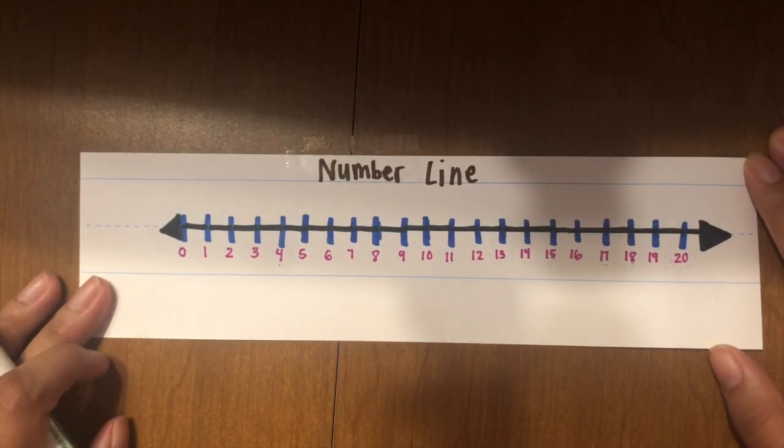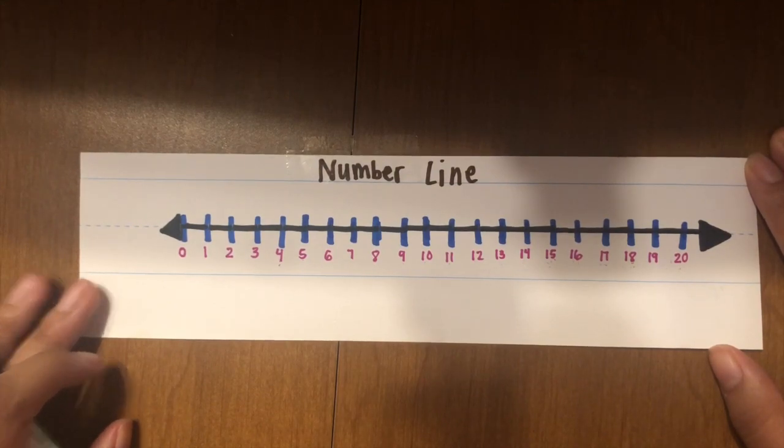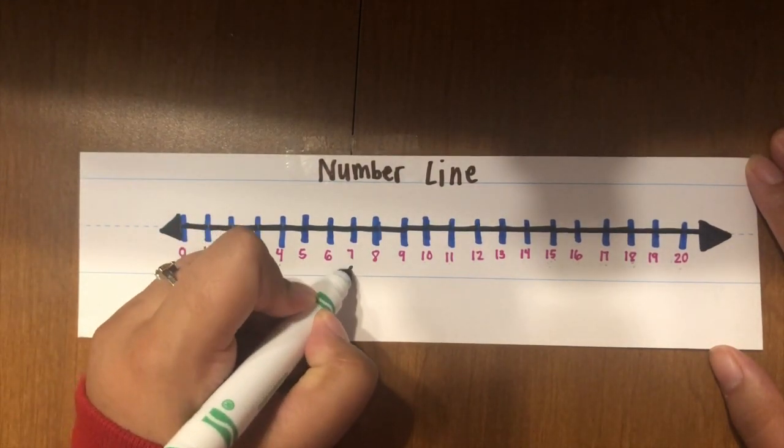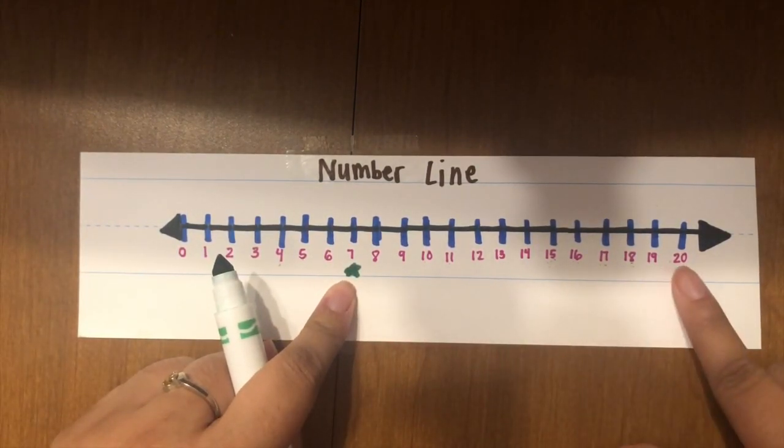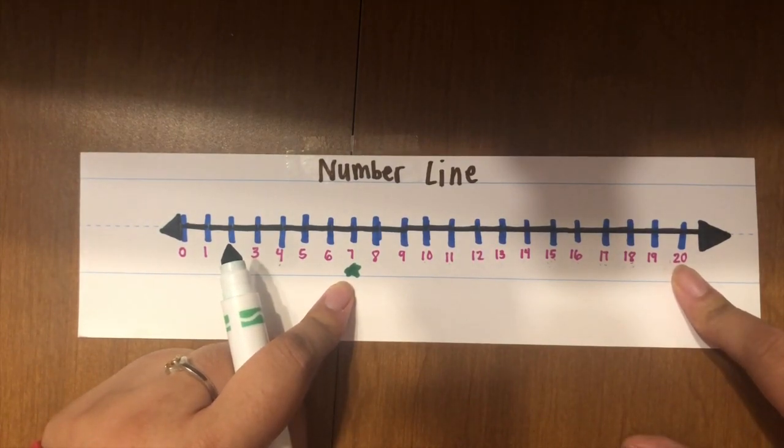Now it's time to try it on your own. First, I want you to start counting at the number 7 and count all the way to 20. Pause the video while you count.